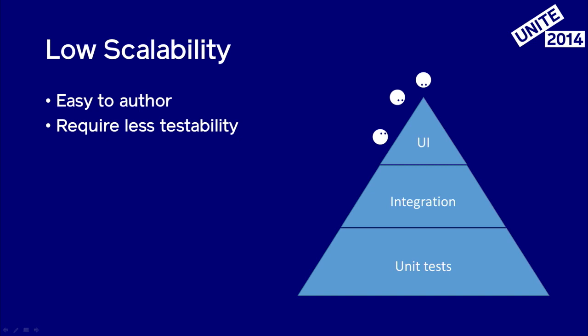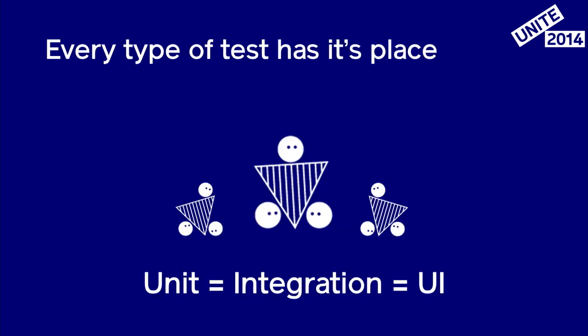Going down in the pyramid you will achieve high scalability. Unit tests are the fastest tests to run; they are the easiest to maintain and the easiest to debug. On the other hand, if you go up in the pyramid you lose scalability, although you gain ease of altering the tests — you don't need the code to be as testable. It doesn't mean that one type of tests is worse or better; they're all important.